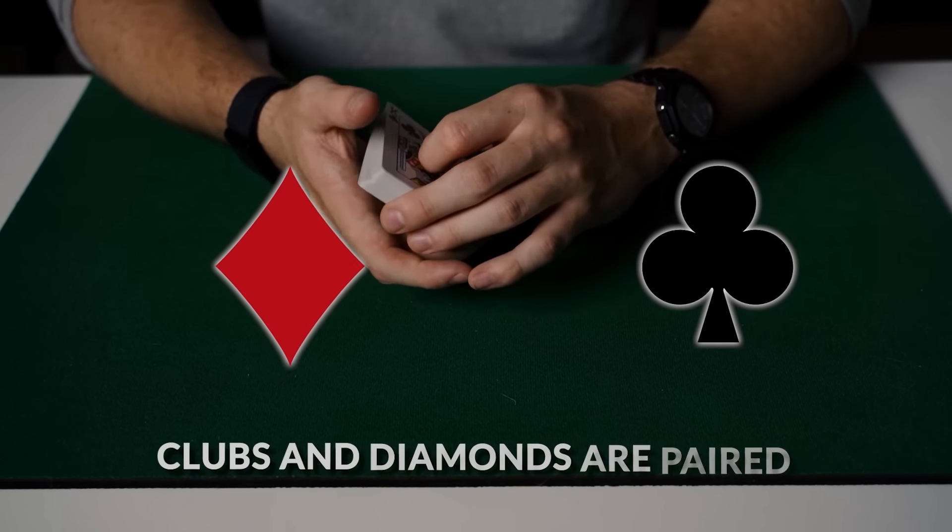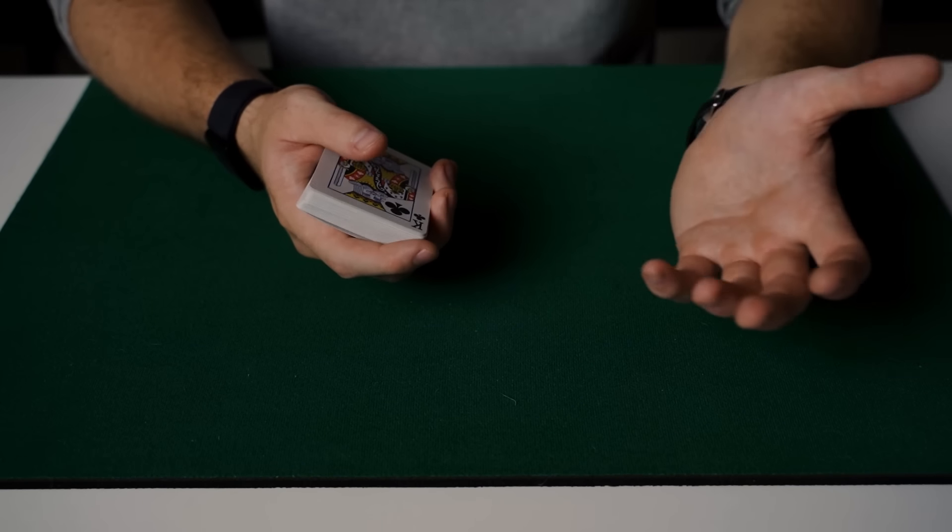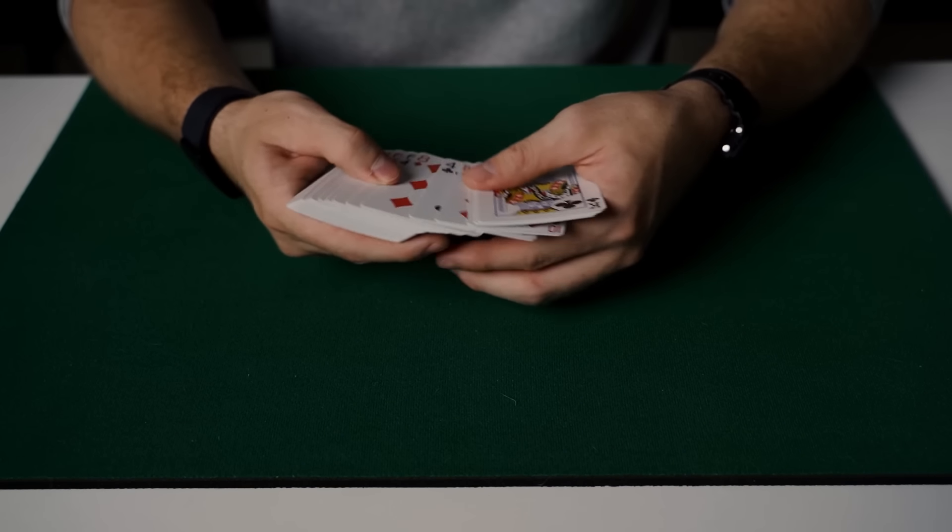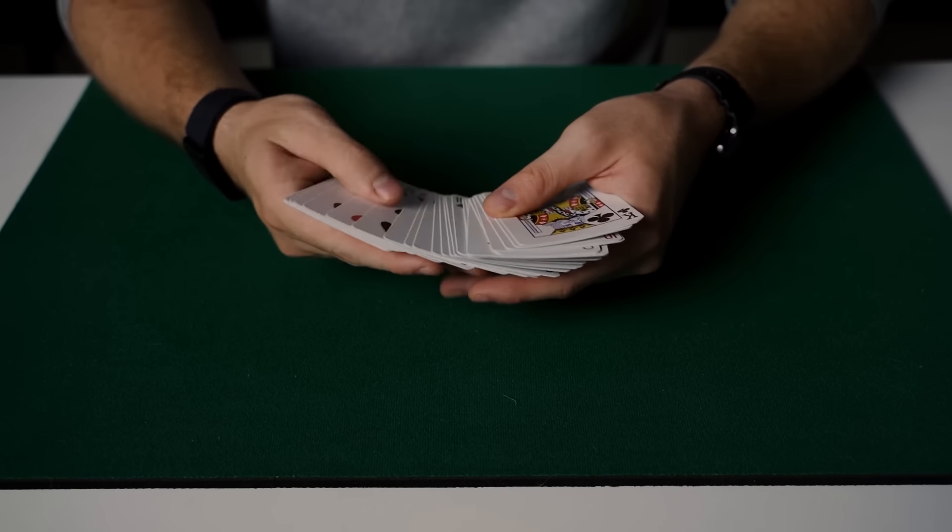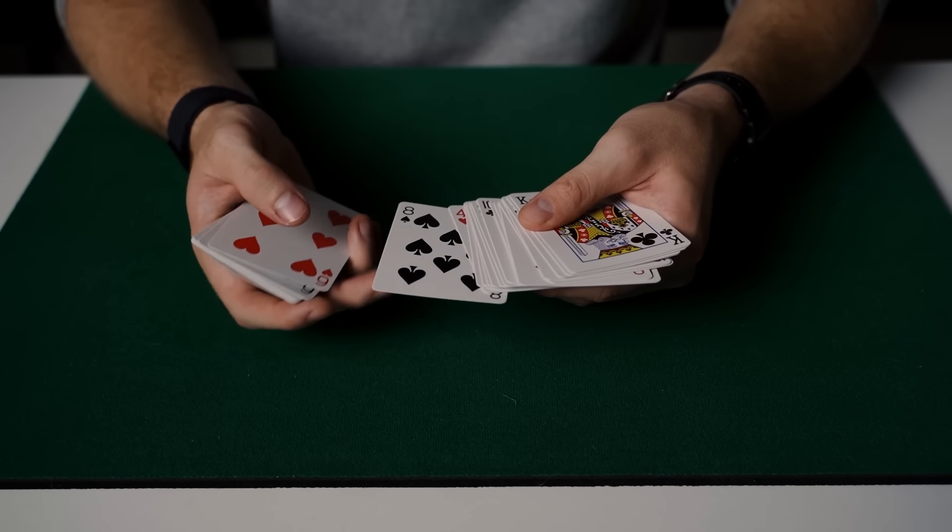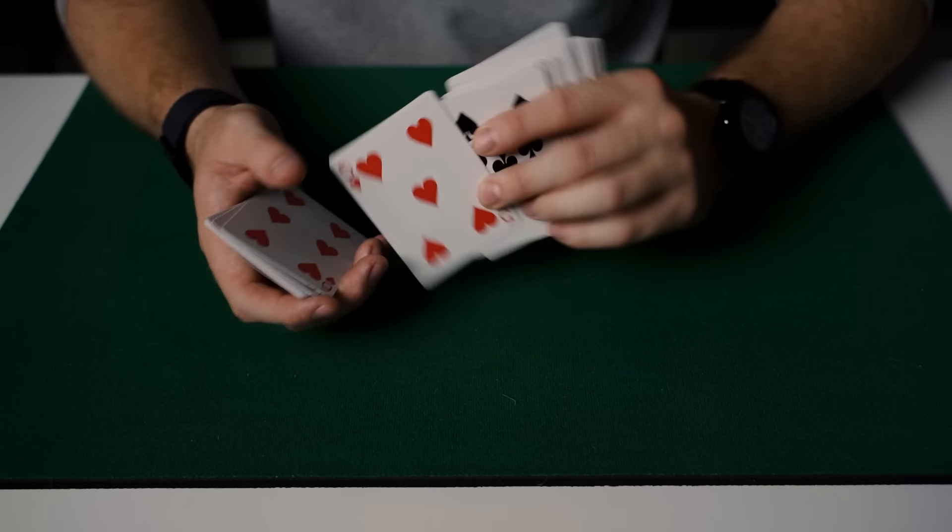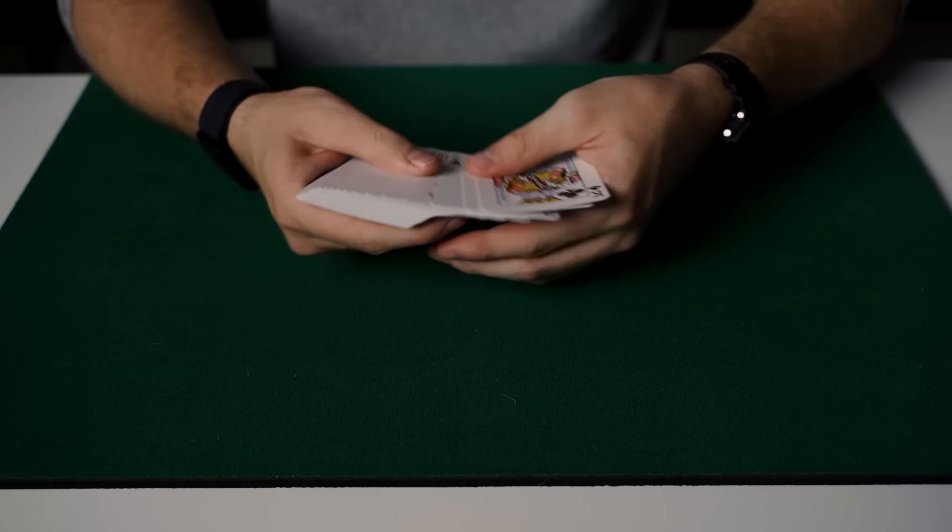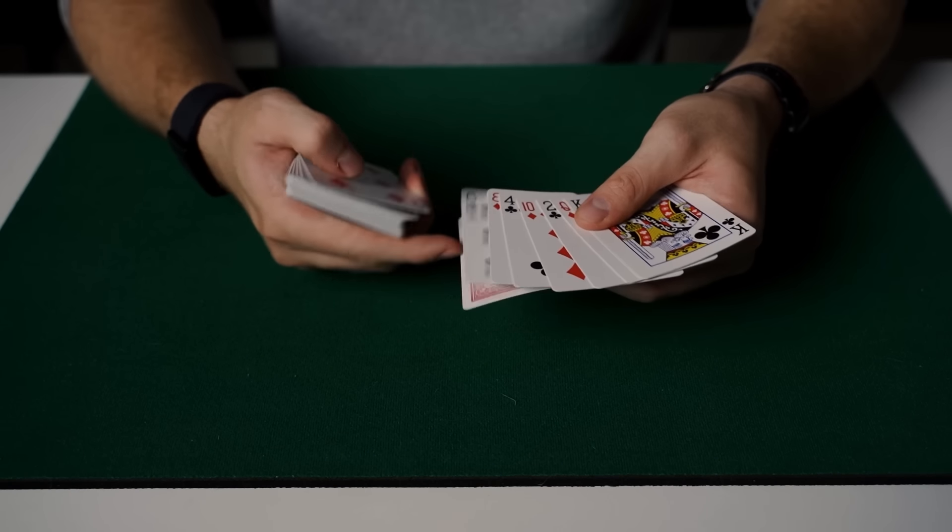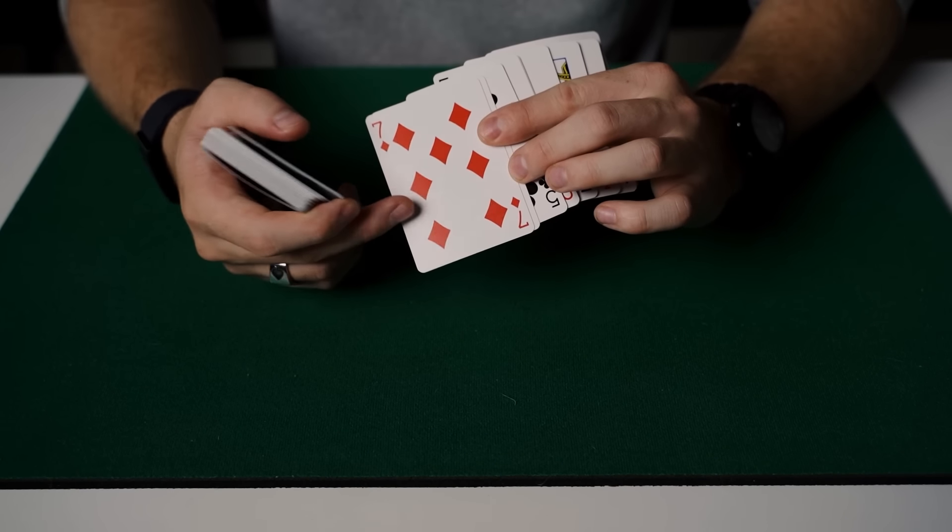The final thing you've got to remember is that Spades and Hearts are paired, and Clubs and Diamonds are paired. So Spades and Hearts, that's easy to remember because they look quite similar. So if I go through the cards, let's find a Spade. You can see there's a Spade here. So we know on the back of it is a Heart. And if I find a Club, you can see that there's a Club here. So we know on the back of it, there's going to be a Diamond.